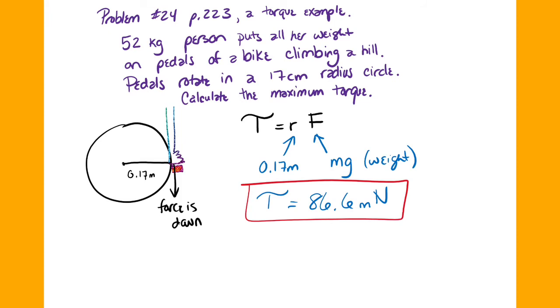So when the tire or the pedal, sorry, the pedal is in the configuration as I have drawn, the person is stepping straight down. At other points in the rotation they're applying force but not their full weight. That's not possible. And so we have the full perpendicular force being applied. We don't need to resolve the vector or anything there. It is 86.6 meter newtons of torque.